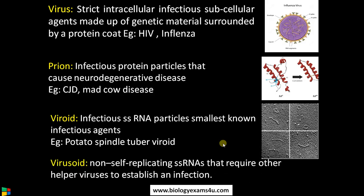The fourth exception is virusoid. They are self-replicating single-stranded RNA particles that require a helper virus to cause and establish an infection. All these mentioned above are subcellular particles that show some characteristics of life but don't come under cell theory, as they don't show the entire qualities of a cell.